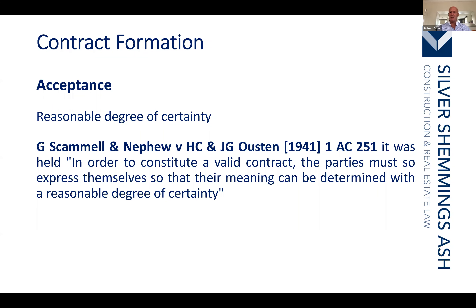Even where an offer has been accepted, there can only be a contract if there is sufficient certainty. A judge must be able to understand what the parties entered into. We can imply a reasonable price or a reasonable timeframe, but if the scope of works has not been clearly identified — what a party is actually to do — that creates a problem. I have seen contracts where the works are so uncertain that there is no contract.